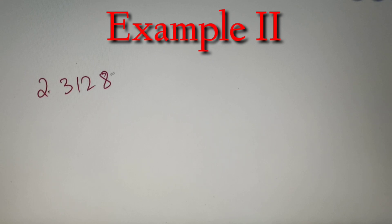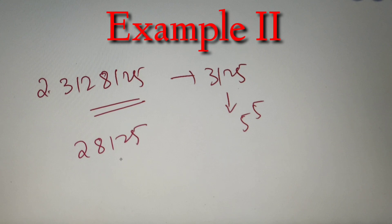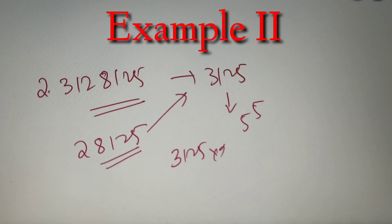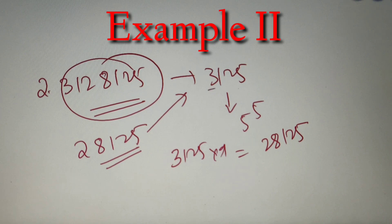Moving on to our second example, we have to check whether the number 3128125 is divisible by 3125 or not. Now 3125 is the fifth power of 5, so according to our rule we have to check the last five digits of the number. The last five digits are 28125. We check whether 28125 is divisible by 3125. Now 28125 equals 3125 into 9, so the given number 3128125 is divisible by 3125.